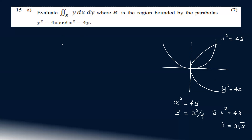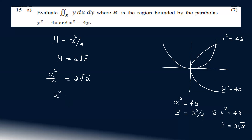We find the intersecting points. Setting y = x²/4 equal to y = 2√x, we get x²/4 = 2√x, which gives x² = 8√x.